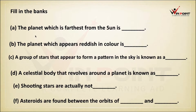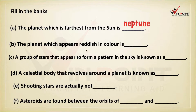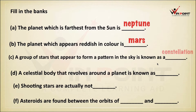Fill in the blanks. The planet which is farthest from the sun is Neptune. The planet which appears reddish in color is Mars. A group of stars that appear to form a pattern in the sky is known as a constellation. A celestial body that revolves around the planet is known as a satellite.